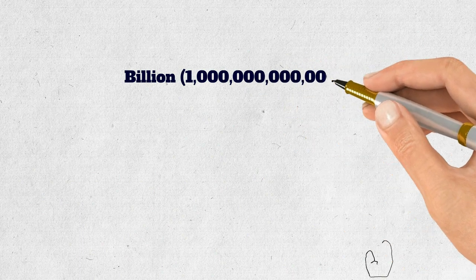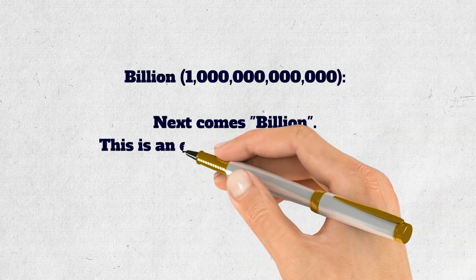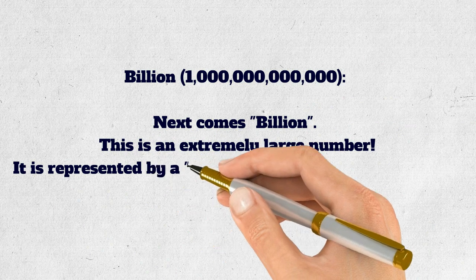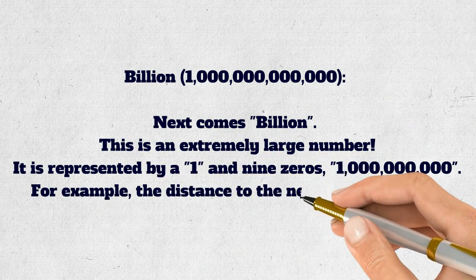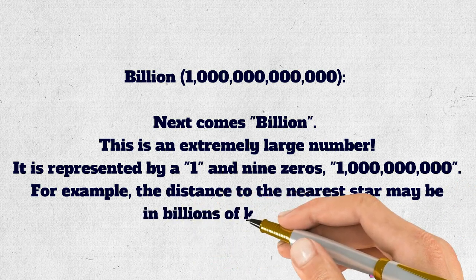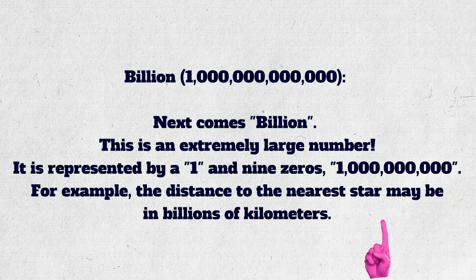Billion. Next comes billion. This is an extremely large number. It is represented by a one and nine zeros, 1,000,000,000. For example, the distance to the nearest star may be in billions of kilometers.